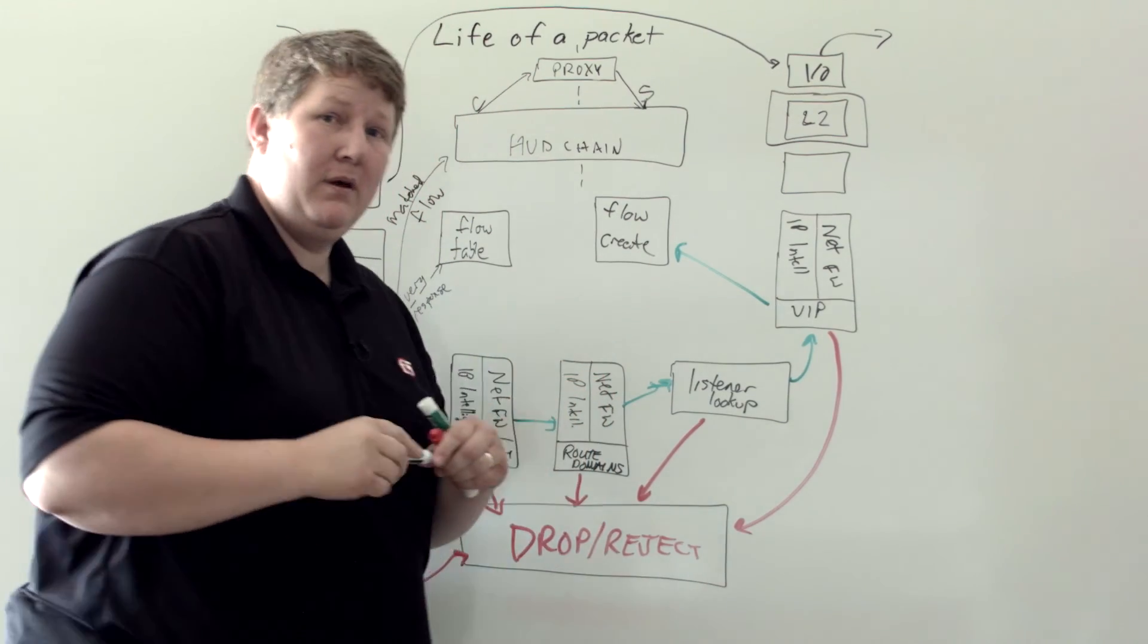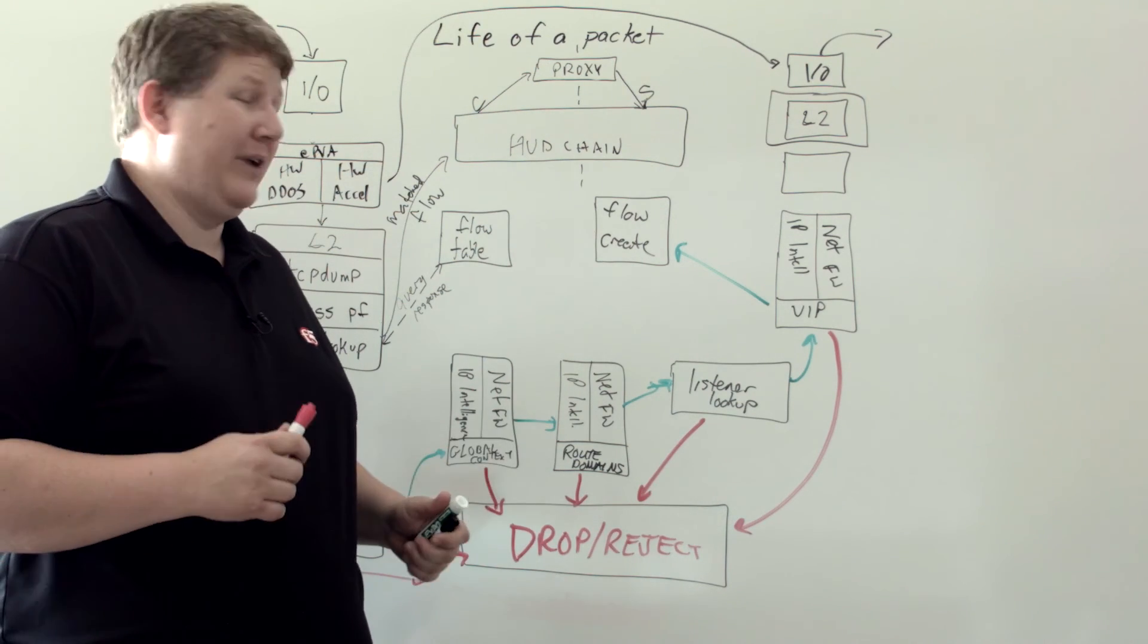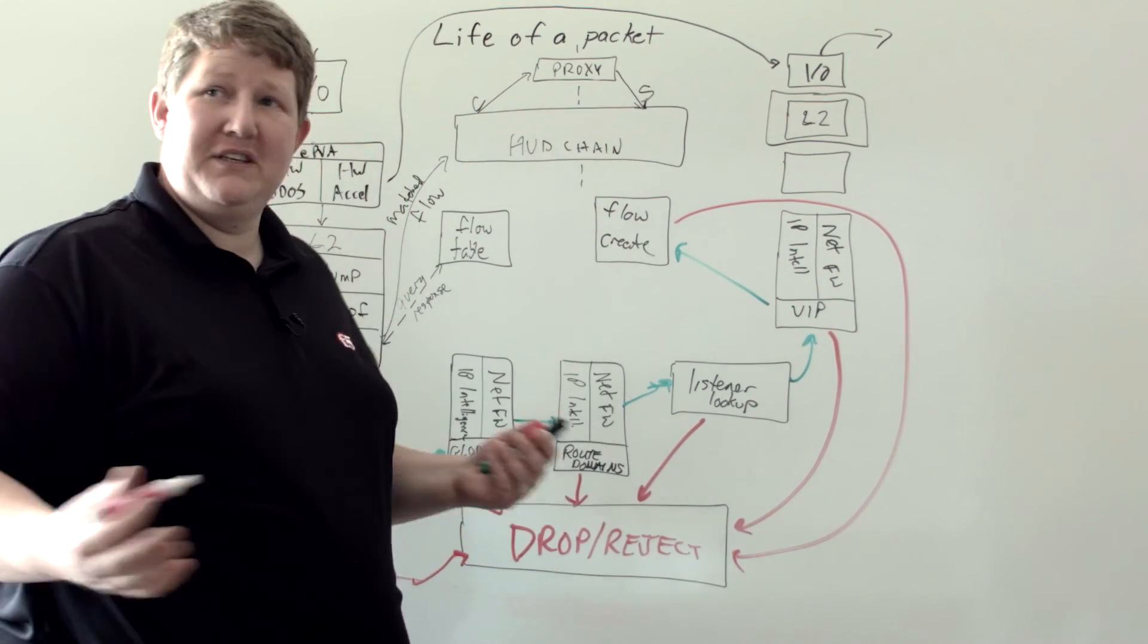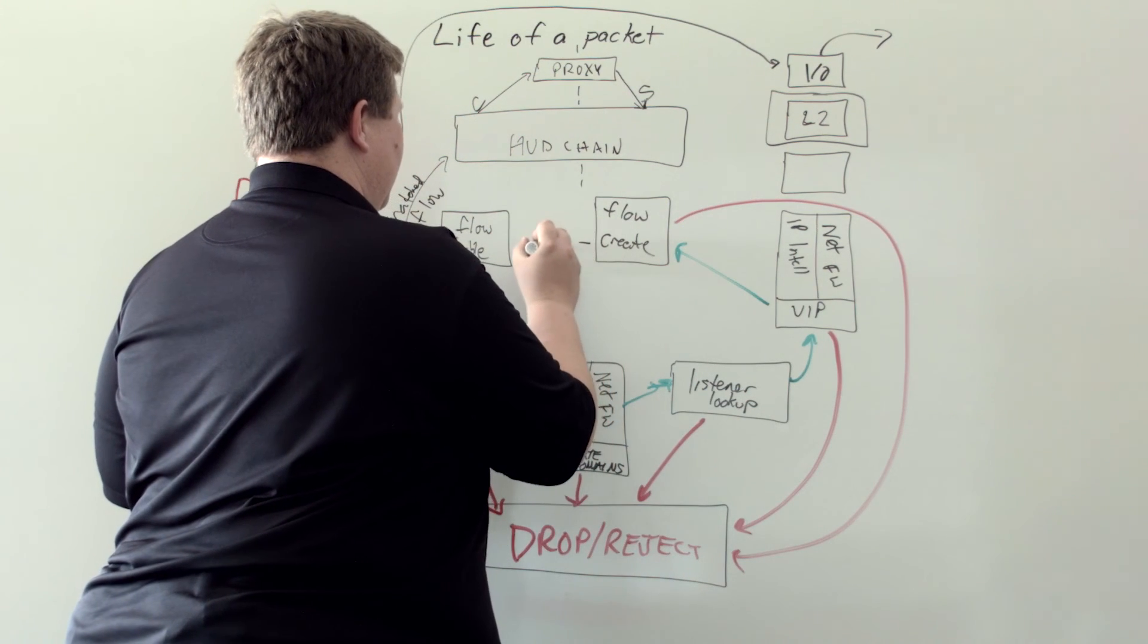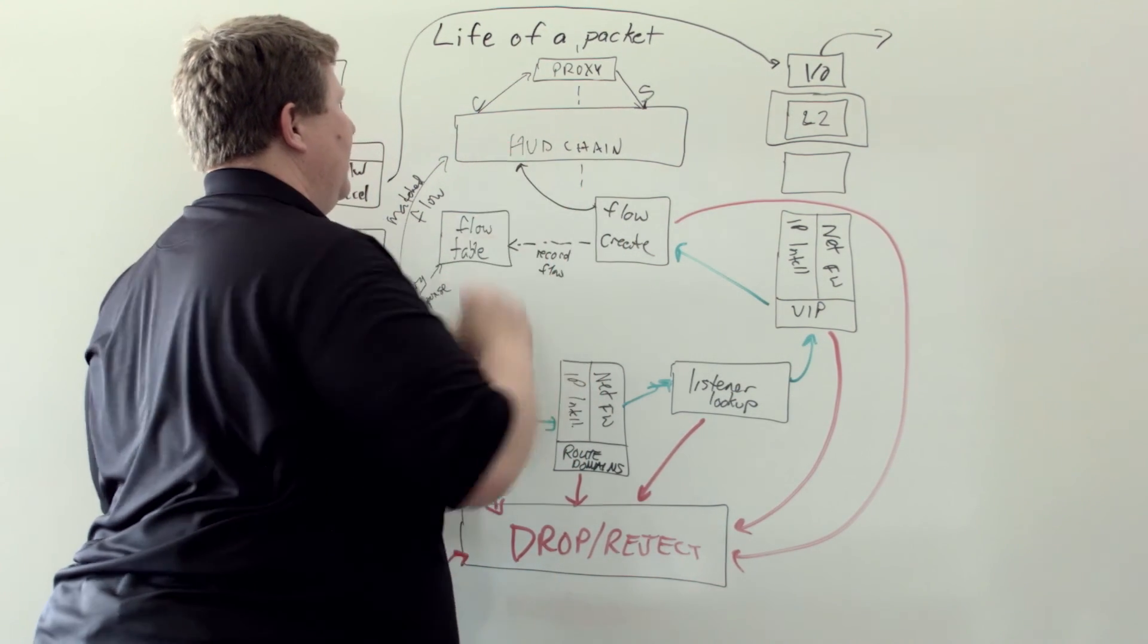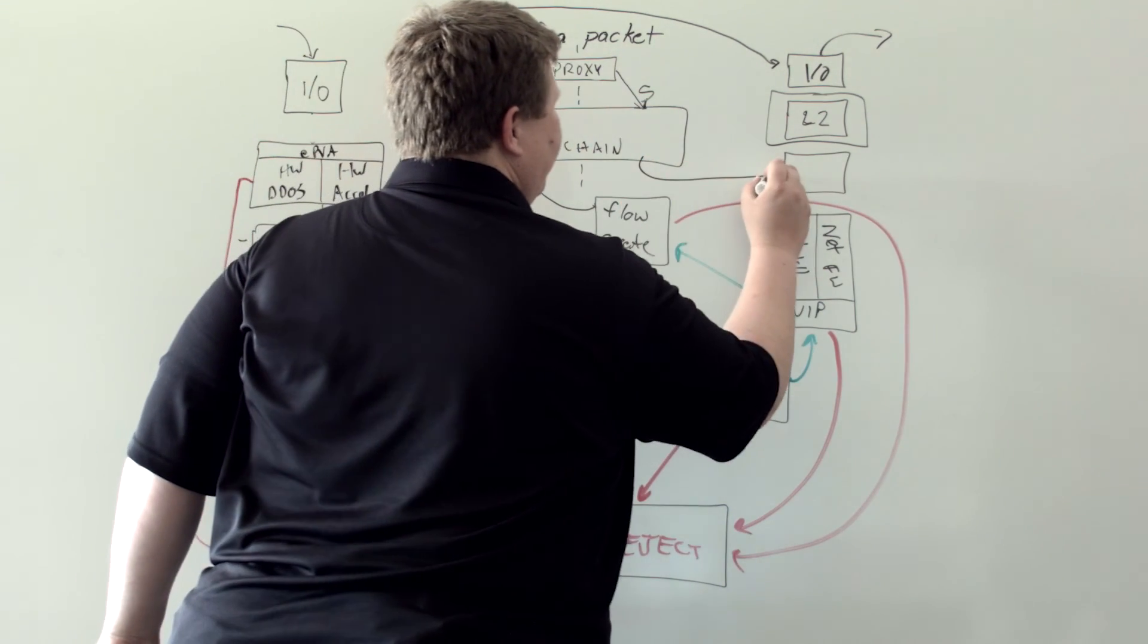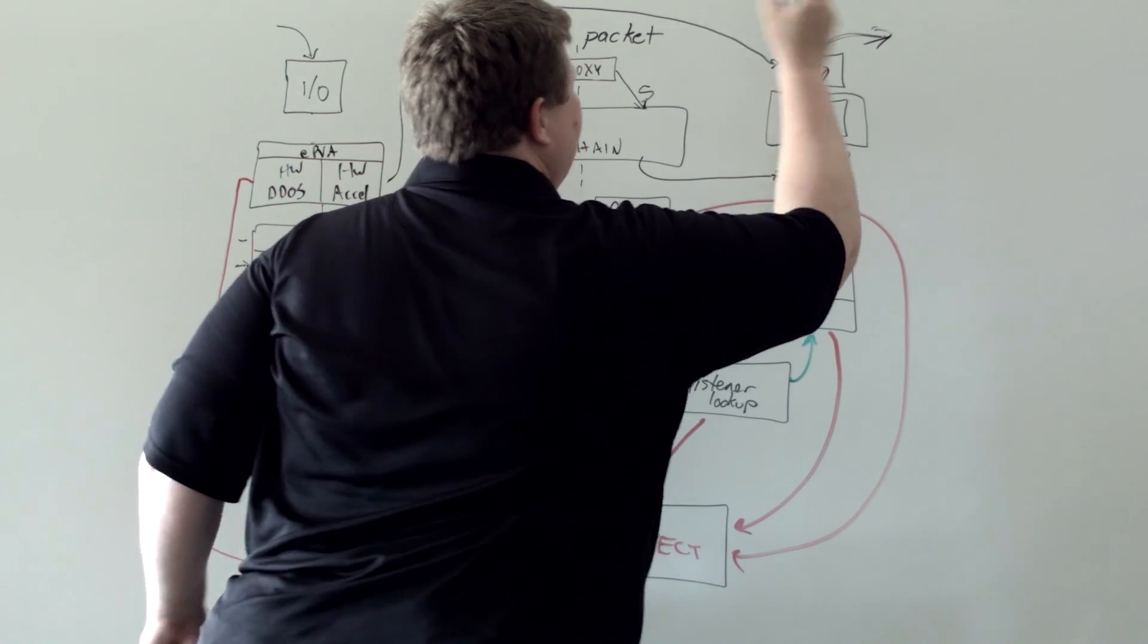We create a flow. That happens if there aren't any licensing rules for why that shouldn't be created. In the event of, like, SSL transactions per second, say you're capped at 1,000 and this is the 1,001st, then sorry, you're going to get dropped or rejected because you've exceeded your license. But if that's not the case, then we're going to go ahead and create your flow. We're going to record that here and then send on your flow onto the client side of the HUD chain. You're going to work your way through the HUD chain as we talked before, client side to server side. On the server side, we're going to hand off to layer three, which then hands off to layer two, which hands off to I/O, and out the door.